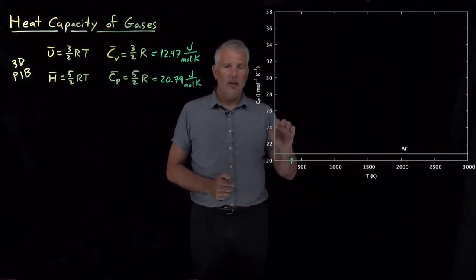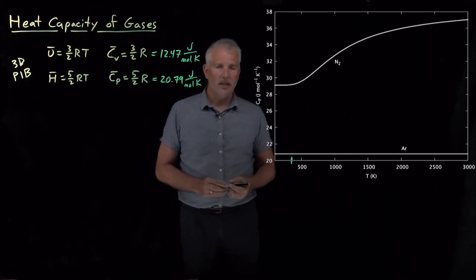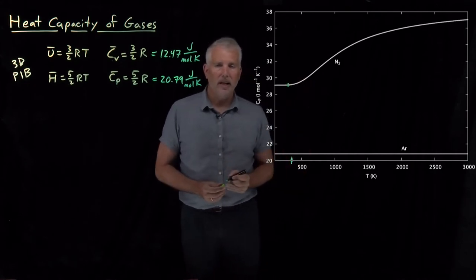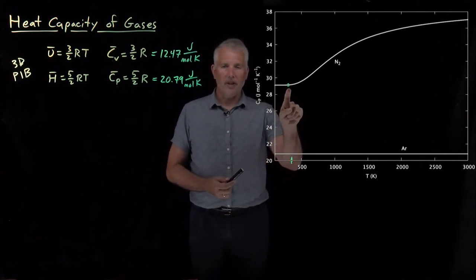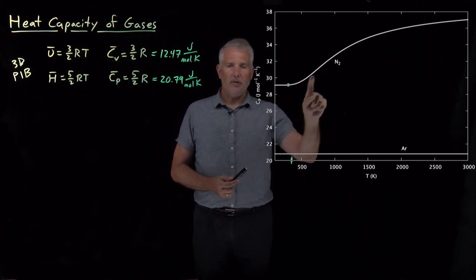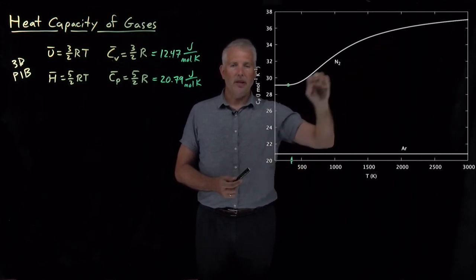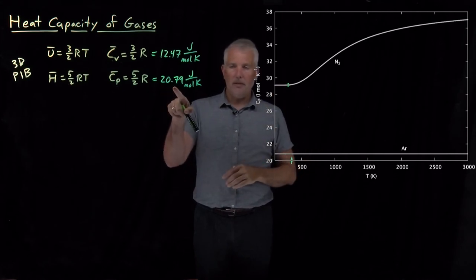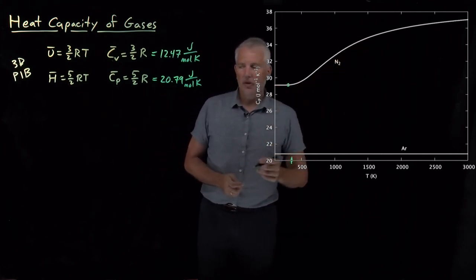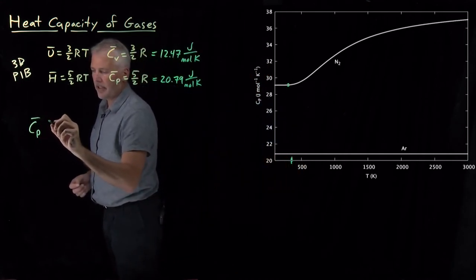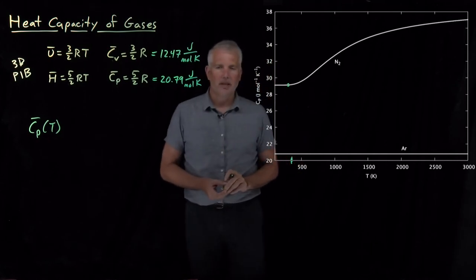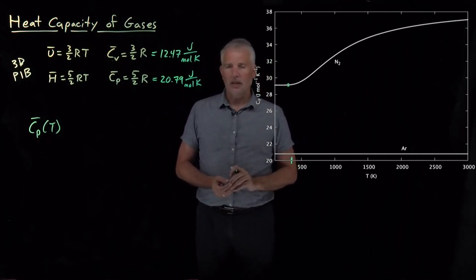But if I pull up the data for another gas, like nitrogen gas, we can see that the value at room temperature, which we saw was about 29 and change at room temperature, if I change the temperature, the prediction gets even worse. So at 500 Kelvin or 1000 Kelvin or 2000 Kelvin, the value is not well predicted by the 3D particle in a box model. And it also keeps changing. So pretty clearly, the heat capacity, for some gases at least, is dependent on the temperature, has some dependence on the temperature. So that's going to complicate things a little bit.